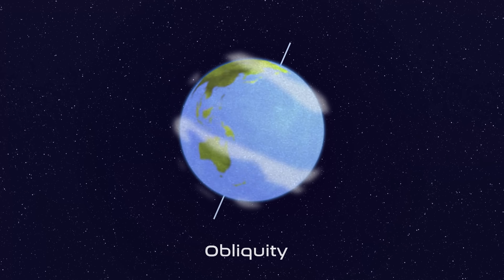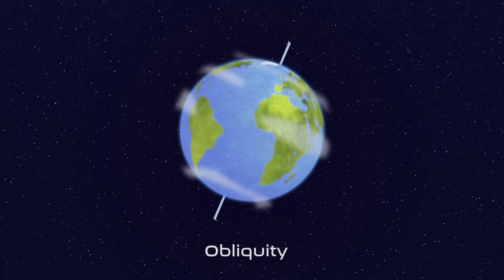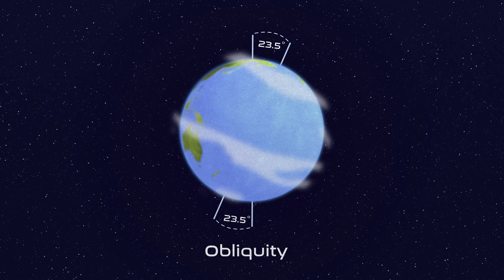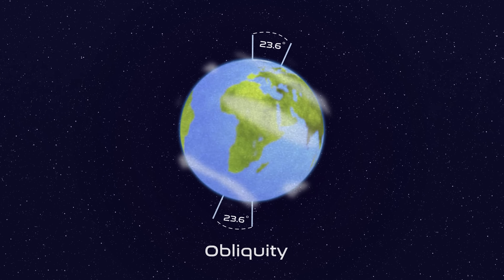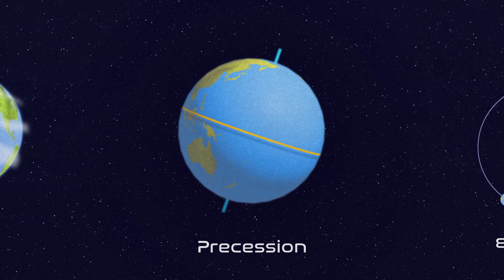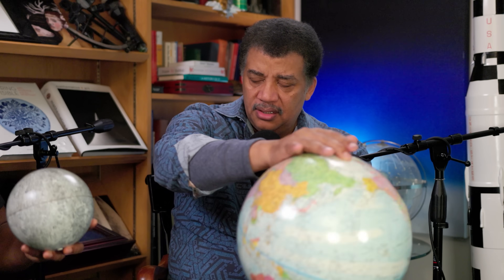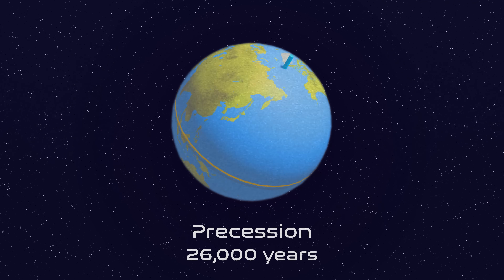The first cycle is the change in tilt, called the obliquity. The tilt, now 23 and a half degrees, wobbles through an oscillation of about a degree each way — going from 22 and a half to 24 and a half degrees back and forth slowly. The second is a change in the direction of the axis in space, called precession, with a 26,000-year period. While the Earth is spinning, the axis wobbles like a top, with a period of about 26,000 years with respect to the stars.